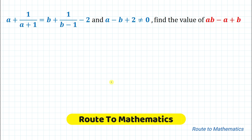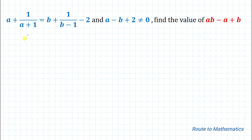Hello everyone, welcome to Root 2 Mathematics. In this video we are going to solve an interesting algebraic question. The given question is: a + 1/a + 1 = b + 1/b − 1 − 2, and a − b + 2 ≠ 0. Then find the value of ab − a + b. So we are asked to find the value of ab − a + b from the given equations. Without any delay, let's start the solution.